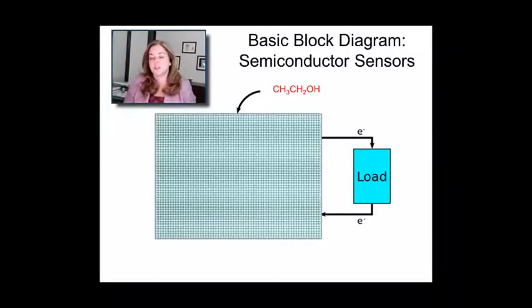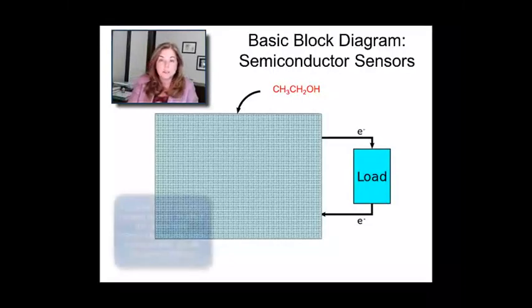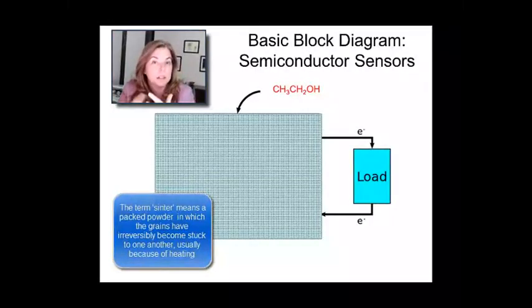So a semiconductor sensor is an interesting thing. What it basically consists of is a porous layer. Think of it as kind of sand that's been all glommed together. And what you're doing is simply measuring the resistance or the conductance across that film of sintered sand. In this case it's not sand, it's usually going to be tin oxide.